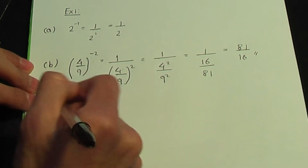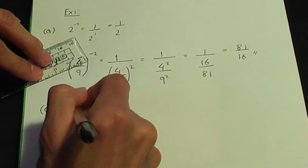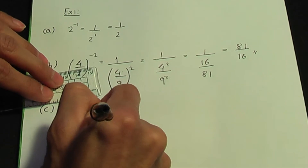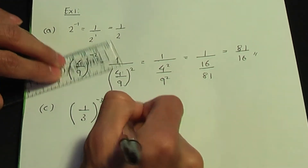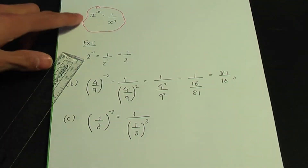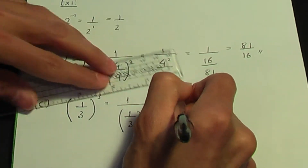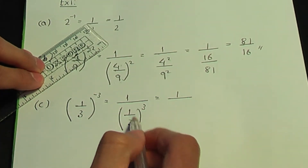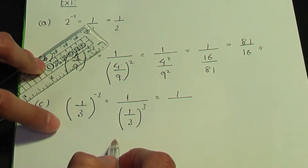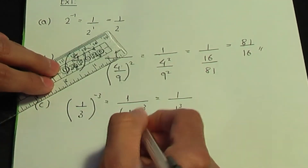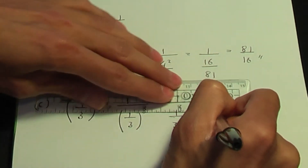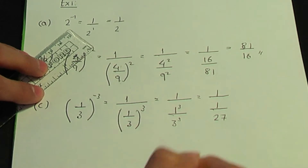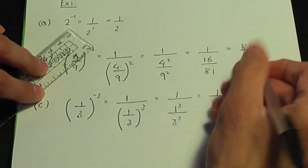Let's have another example — part c. If we have 1 over 3 to the power minus 3, that is the same as 1 over 1 over 3 to the power plus 3, according to this result. I can apply this power 3 again to the numerator and denominator to give us 1 to the power 3 over 3 to the power 3. 1 to the power 3 is 1, and 3 to the power 3 is 27. So 1 over 1 over 27 is the same as 27.